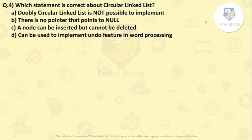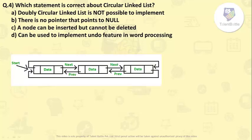Next question: which statement is correct about circular linked list? The options are: A) doubly circular linked list is not possible to implement, B) there is no pointer that points to null, C) a node can be inserted but cannot be deleted, and D) can be used to implement undo feature in word processing. So first let us understand what is a circular linked list.